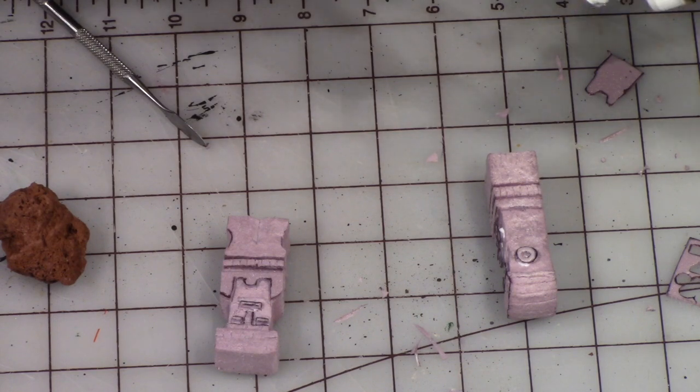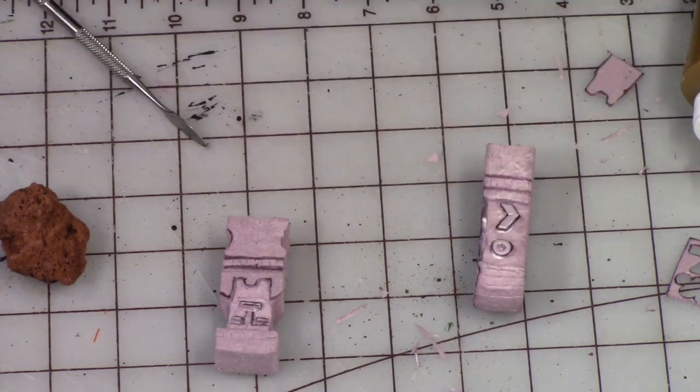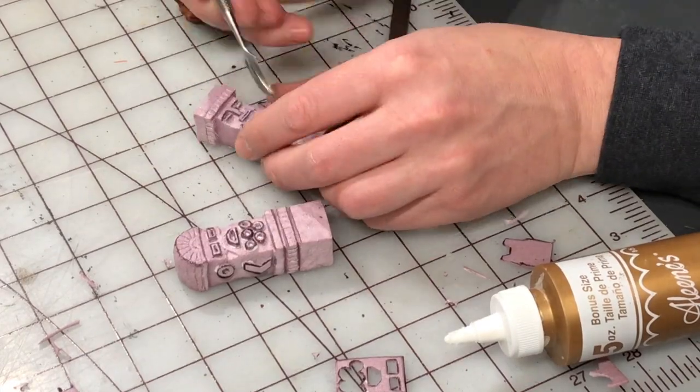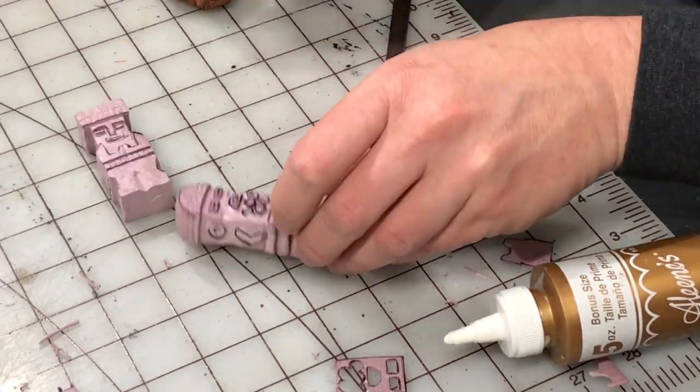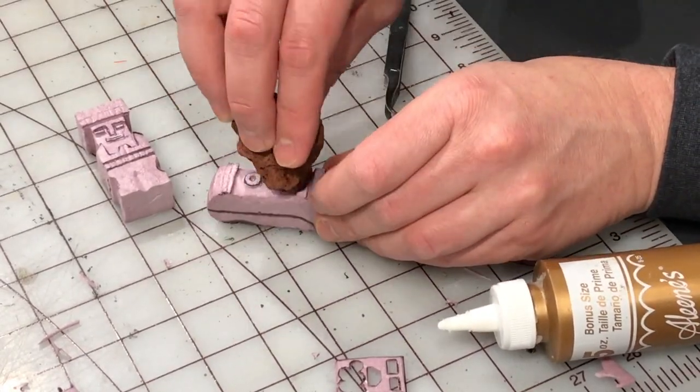The tacky glue works well to hold those pieces in place and they'll set up very nicely. Now I'm texturing with the stone, making sure that the front of those pieces gets a little bit of that same texture.